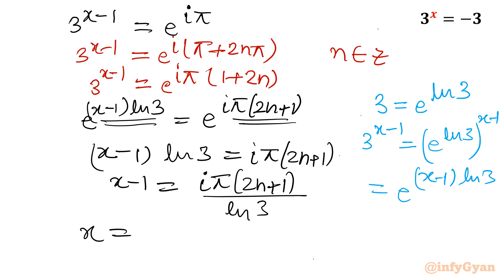So x will be - add 1 to both sides: 1 plus i pi times 2n plus 1 over ln 3. This is our final answer in complex form, which is the possibility.